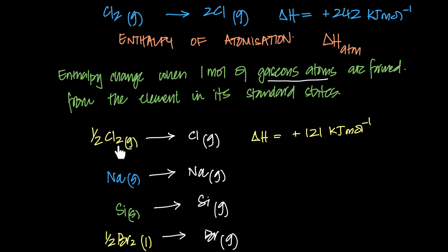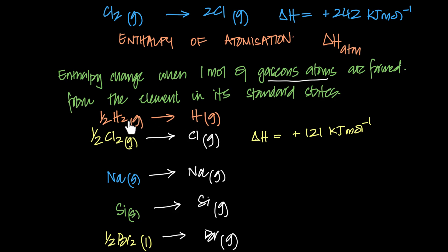For gaseous elements, the atomization equation is literally half the bond enthalpy equation. For hydrogen, one mole of gaseous hydrogen is half H₂ becoming H gas, which is exactly half the bond energy equation of hydrogen. So for some elements, atomization is literally half the bond energy.